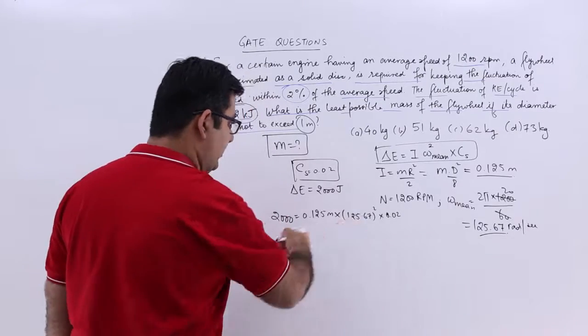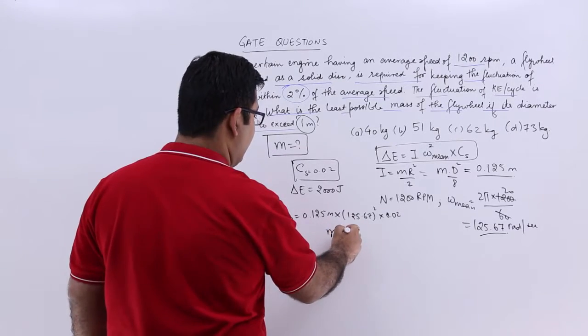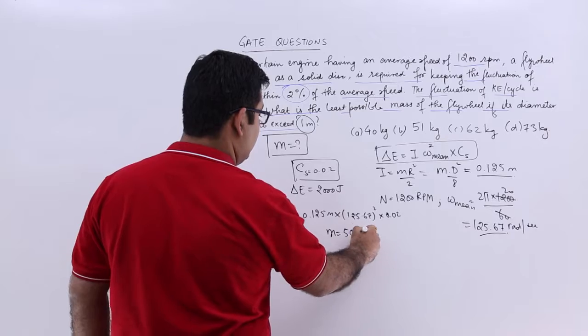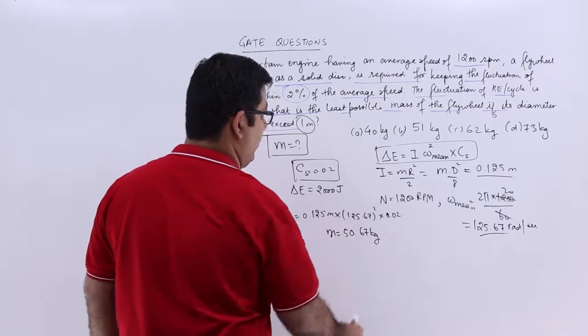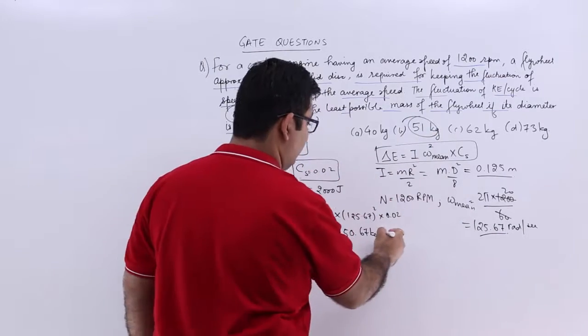So from this expression, we will get the value for M as 50.67 kg. So the nearest value is 51.